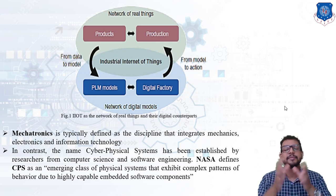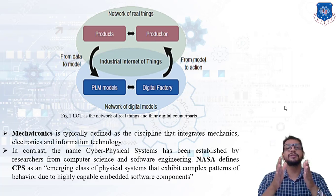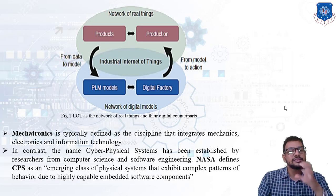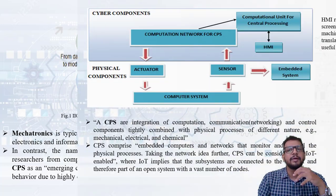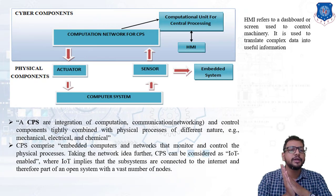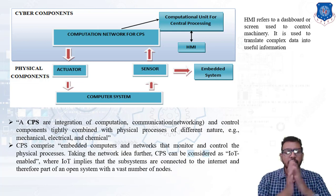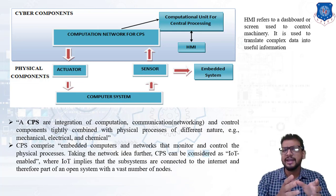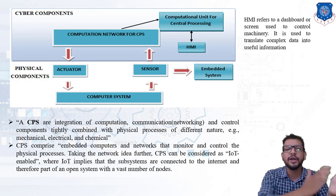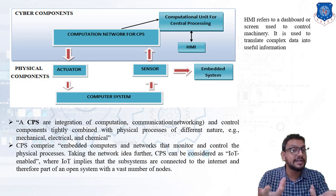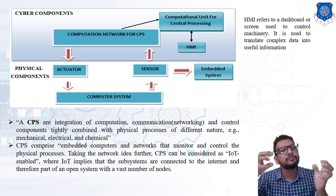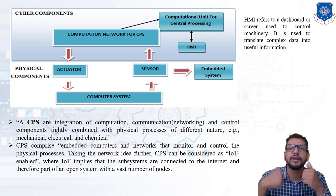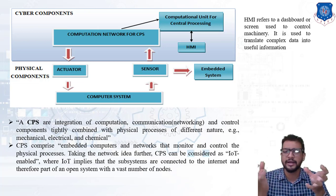NASA has given a definition for CPS as 'an emerging class of physical systems that exhibit complex patterns of behavior due to highly capable embedded software components.' To understand this with an example: there are two components — a cyber component and a physical component. The physical component contains an actuator and a sensor. An actuator performs an operation, for example a piston-cylinder arrangement or a hydraulic cylinder, and a sensor is attached to it to sense the condition of the actuator.